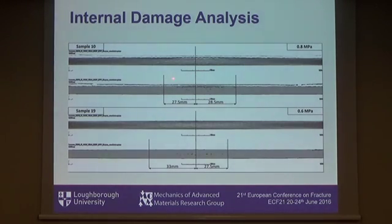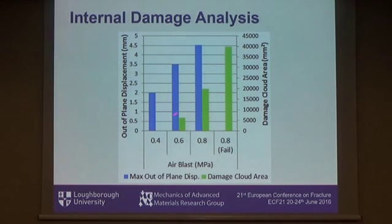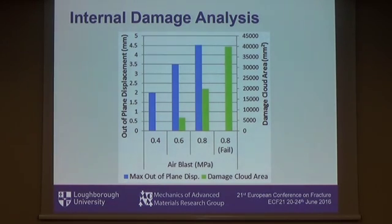These are the internal features from the digital cross-sections of the damage analysis. We observed a roughly linear increase in out-of-plane displacement with increasing applied load, but a significantly more-than-linear increase in the damaged cloud area. This data, together with what was presented for projectile impact, is now being used as a benchmark for numerical simulation, in order to develop proper models of dynamic damage in composite materials. Thank you very much for your attention.